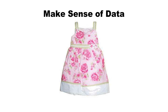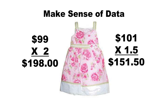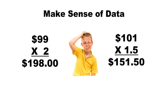For instance, let's say you sold dresses and it was your policy to double the cost on all dresses that cost less than $100 to arrive at a selling price. But it was also your policy to mark up dresses costing more than $100 by 1.5. So if a dress costing $99 increases to $101, the price goes down from $198 to $151. And that doesn't make sense to anyone — to you or your customer.